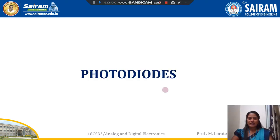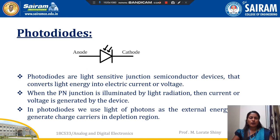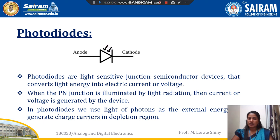Here I am going to discuss about the photodiode. A photodiode is one type of diode. It is a light-sensitive junction semiconductor device that converts light energy into electric current or voltage. When the P-N junction is illuminated by light, the current or voltage will be produced by the device. The band gap energy decides the spectral response of the device.